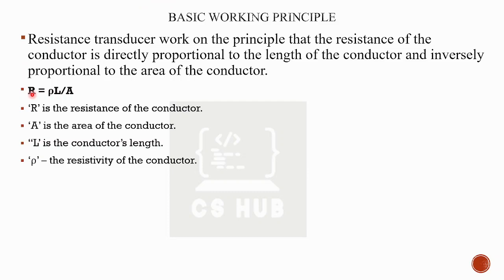Resistance of a conductor is directly proportional to the conductor's length L, and inversely proportional to the conductor's area A. So R is equal to rho times L divided by A, where rho is the resistivity of the conductor.